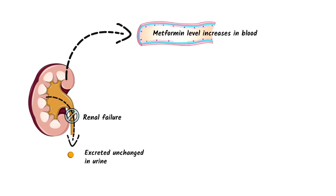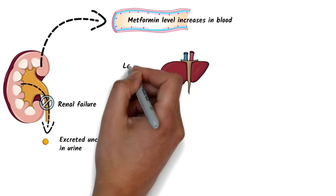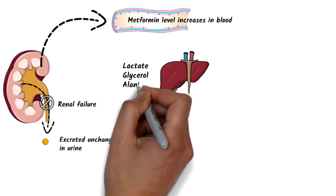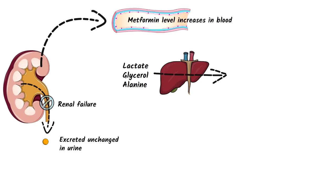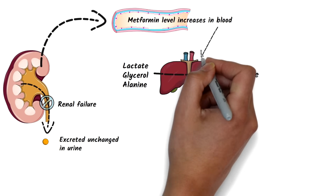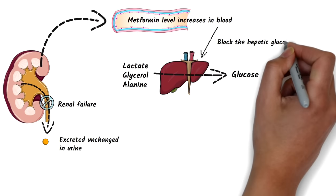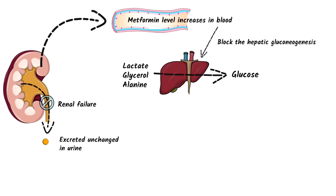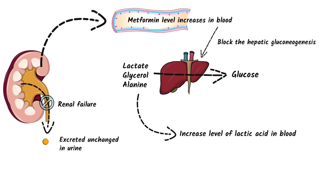As we have discussed, the primary action of metformin is to block hepatic gluconeogenesis. The main substrates for gluconeogenesis are lactate, glycerol, and alanine, which are converted to glucose in the liver. Increased metformin levels in blood in renal failure impair the hepatic utilization of lactic acid. This leads to increased levels of lactic acid in blood, which eventually leads to lactic acidosis.